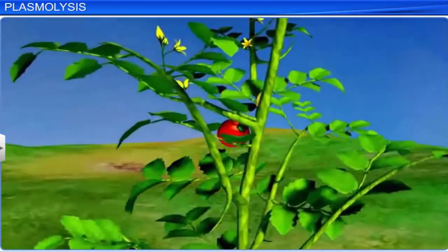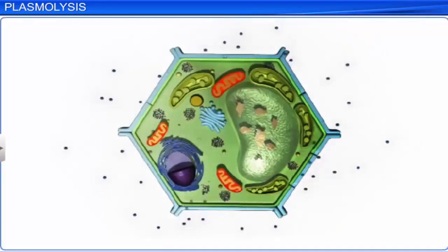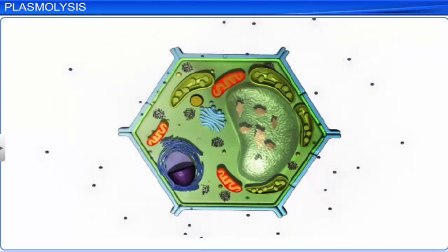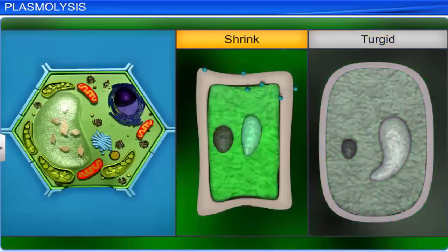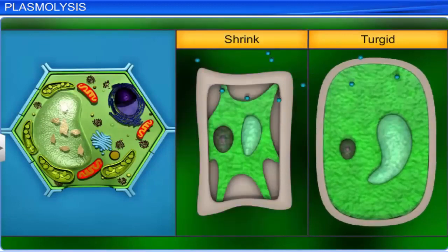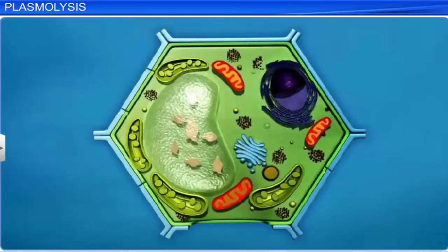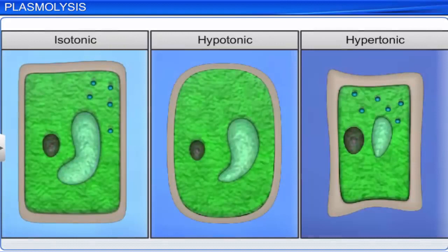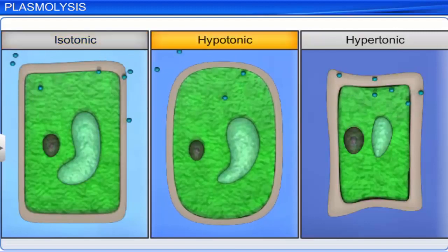Movement of water in and out of a plant cell is essential to a plant's existence. The plant cell wall can either shrink or become turgid in response to the movement of water. It is the surrounding solution of the cell that decides the direction in which water flows. The surrounding solution can be categorized into three types: isotonic, hypotonic, and hypertonic.